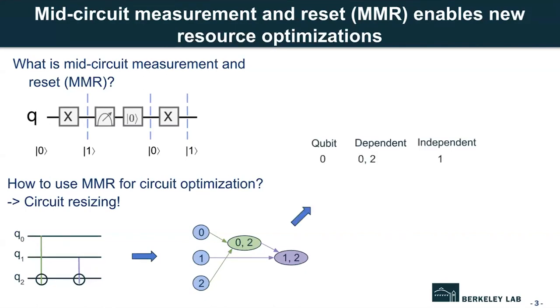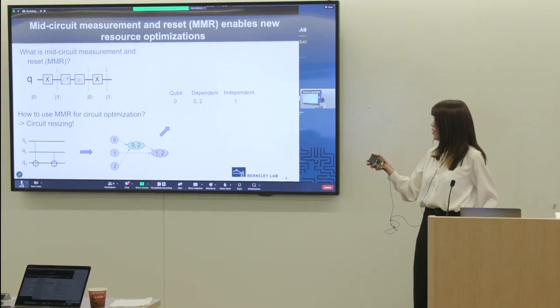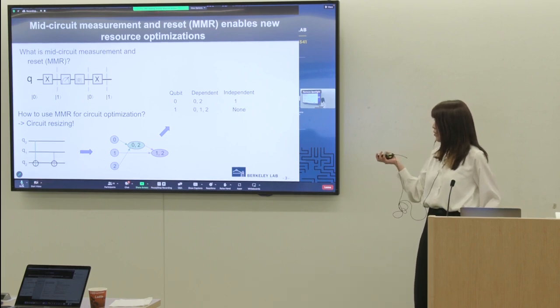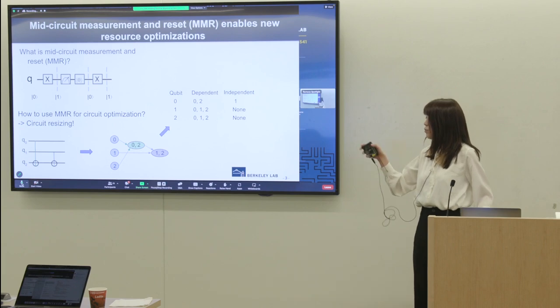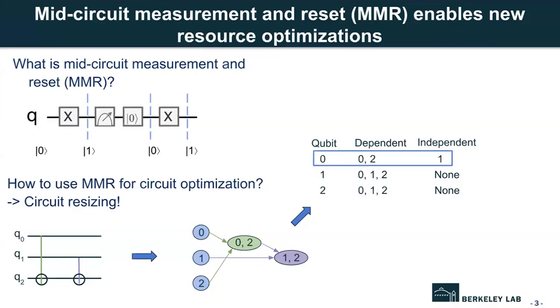So from the graph, we can see for Q0, as shown in the green circle, the finish of Q0 only depends on Q0 and Q2. It is irrelevant to Q1. But as shown in the purple circle, the finish of Q1 and Q2 depend on all the qubits. So let's take a look at Q0. Since it is independent to Q1,